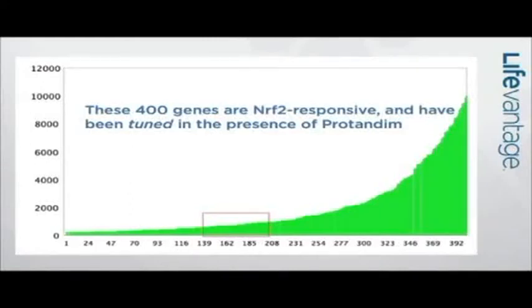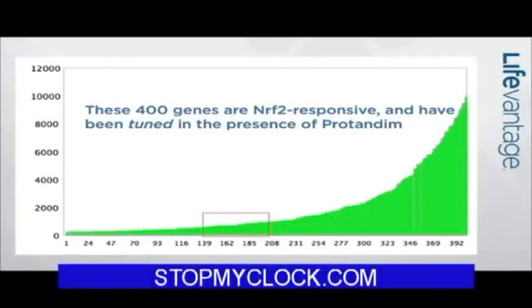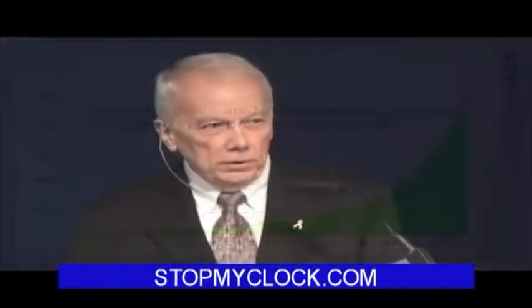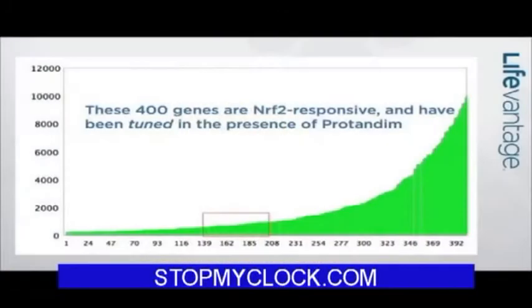These are the 400 genes — real data from my laboratory, from human cells — 400 genes that respond most to protandim being added to the culture medium. The height of each of the 400 little bars tells you how frequently that gene is being expressed: how often that blueprint is being called out of the nucleus of that cell and functionally translated into the product for which that blueprint encodes.